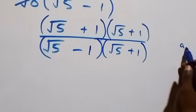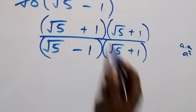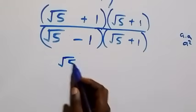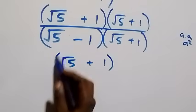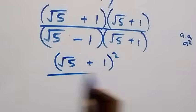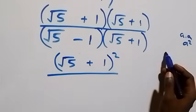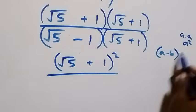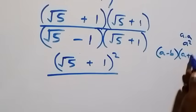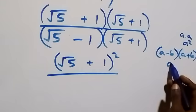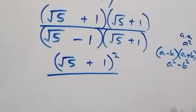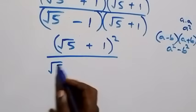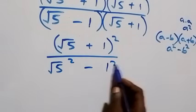So we multiply by root five plus one over root five plus one. The expansion in the numerator: when we have a times a, that is a squared — so in the bracket we write that as root five plus one, all squared. The denominator follows the difference of two squares: a minus b times a plus b equals a squared minus b squared.